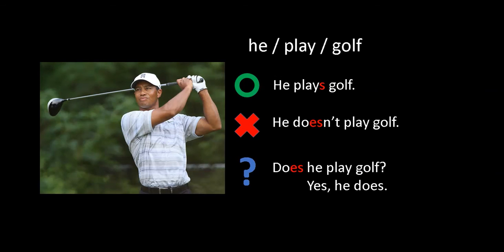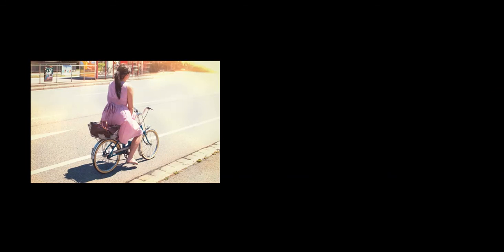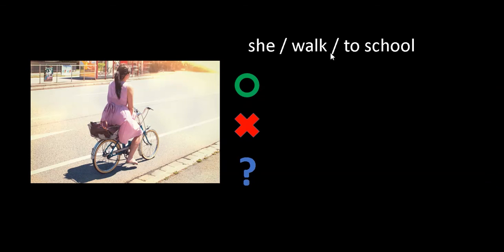Next we've got a girl, and our sentence uses the words she, walk, and to school. She—again we need the S—so she walks to school. What's next? She doesn't walk to school.